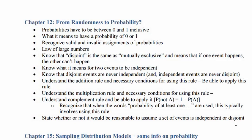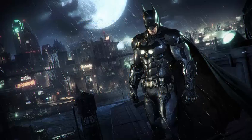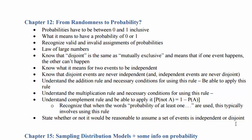Starting back with probabilities: first, probabilities have to be between zero and one. Something with a probability of zero would never ever occur — so I often say the probability that I get to meet Batman, not Christian Bale or Ben Affleck, but actual Batman, would have a probability of zero.